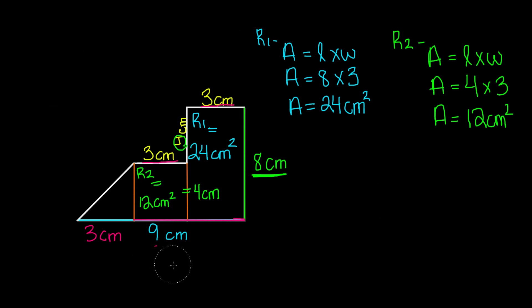Now let's find the height of this triangle. The height is parallel to this length over here, which is 4 centimeters. So we know that the height of this triangle is also 4 centimeters.